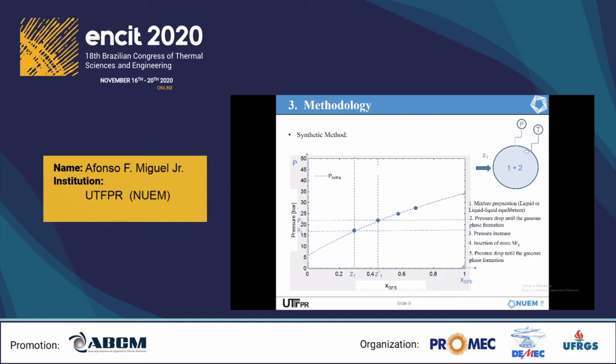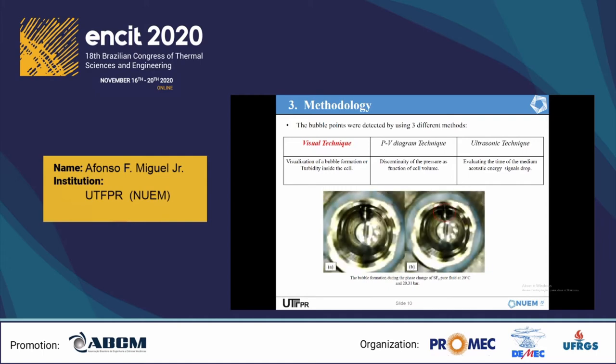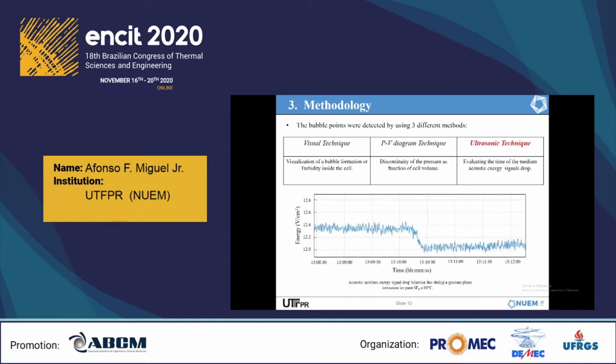The bubble points were detected using three different techniques. The visual technique, where the bubble was detected by visualizing a bubble formation or turbidity inside the cell. The PV diagram technique, where the bubble pressure was indicated by the discontinuity found on the pressure-volume curve. And the ultrasonic technique, where the bubble formation would be detected by evaluating the exact time of the medium acoustic energy drop.